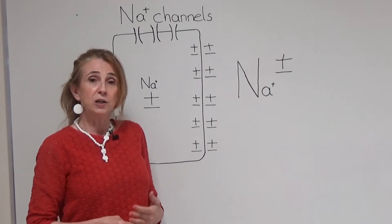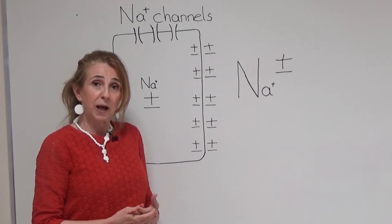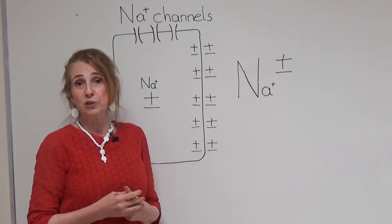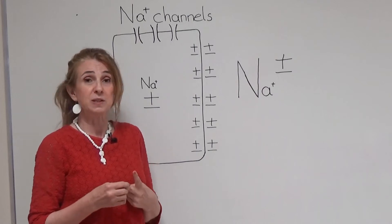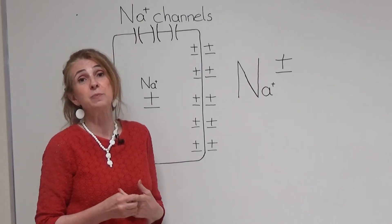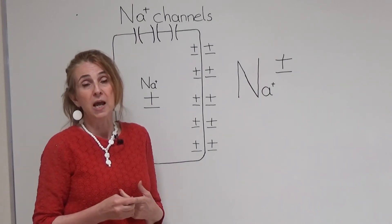For the ions to be able to pass the membrane, two conditions must be provided. One, there must be an ion channel. Two, there must be a force.